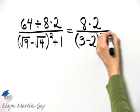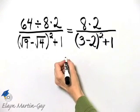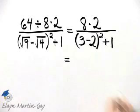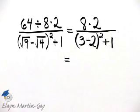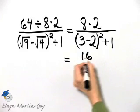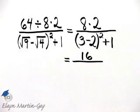Let's continue to work above and below this fraction bar independently. Above the fraction bar, what is 8 times 2? Well, 8 times 2 is 16. Now let's work below the fraction bar.